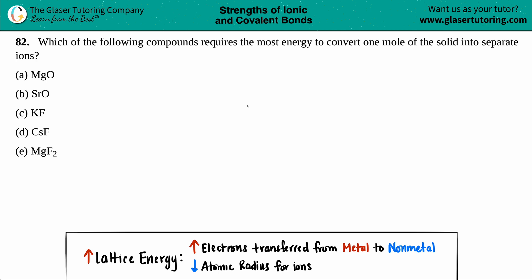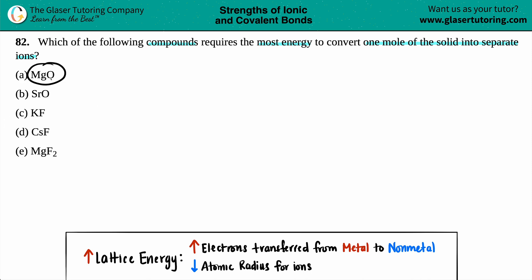Number 82. Which of the following compounds requires the most energy to convert one mole of the solid into separate ions? We have five answer choices: magnesium oxide, strontium oxide, potassium fluoride, cesium fluoride, or magnesium fluoride. Which one would require the most energy to convert the solid into its ions?